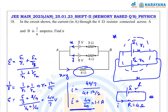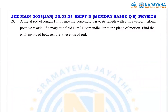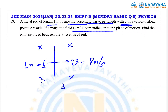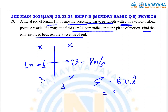Note: all these are memory-based questions, so some data may differ from the actual paper due to memory recall. Next question: a metal rod of length 1 m moves perpendicular to its length with velocity 8 m/s. A magnetic field of 2 T is perpendicular to the plane. Since B, v, and L are mutually perpendicular, EMF = BvL = 2 × 8 × 1 = 16 V.